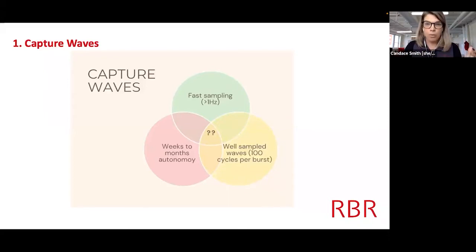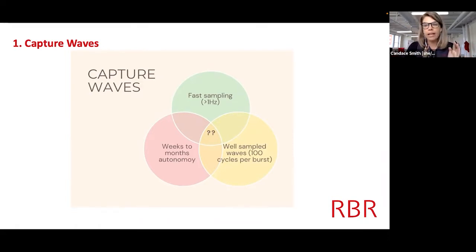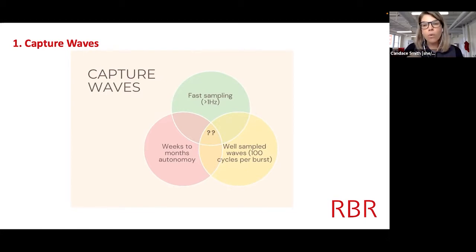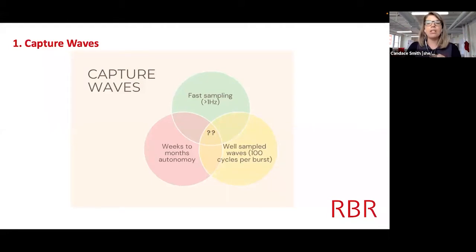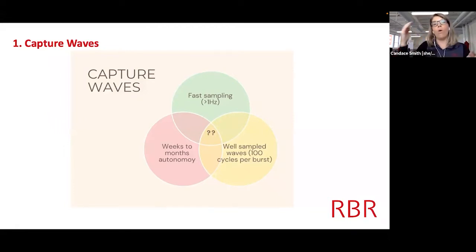Really, there are three main pieces to capture waves. The first is fast sampling — by that I mean sampling more than once a second. One hertz means once a second, four hertz means four times a second. You really need to sample quickly to capture waves. You also need to be able to deploy an instrument for weeks or months, with enough battery memory for fast sampling over extended periods. And you need to make sure you're well-sampling the waves — a rule of thumb is you want a hundred wave cycles in every burst, captured through burst sampling.